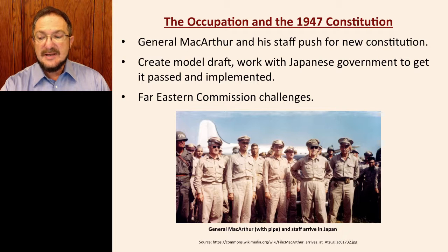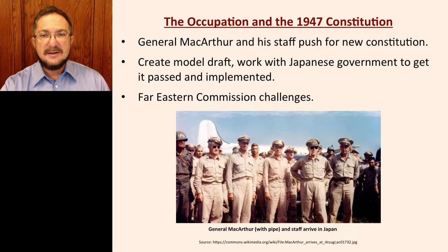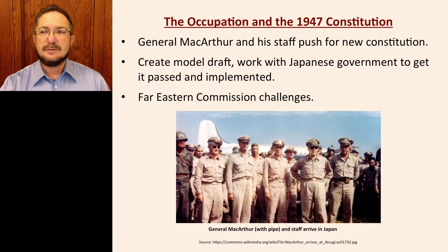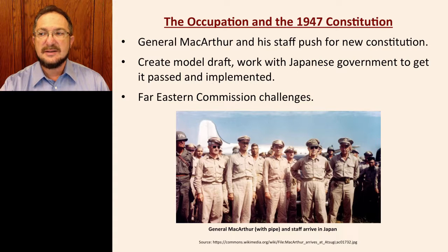But it was during the occupation that the first challenge to the Constitution arose, and it was from one of the bodies supposedly in charge of the occupation — the so-called Far Eastern Commission. The Far Eastern Commission included representatives from all of the Allied powers, and in theory MacArthur answered to it, but in reality he often did what he wanted. The Commission was surprised to learn that MacArthur had pushed for a new Constitution without consulting it first. They urged a review of the document within one to two years of its passage and followed through in 1948 and 1949, calling for clarification of things such as the Japanese Supreme Court's ability to evaluate legislation for its constitutionality. But not much came of their efforts, although it would not be the last time that powers outside of Japan would call for constitutional changes.